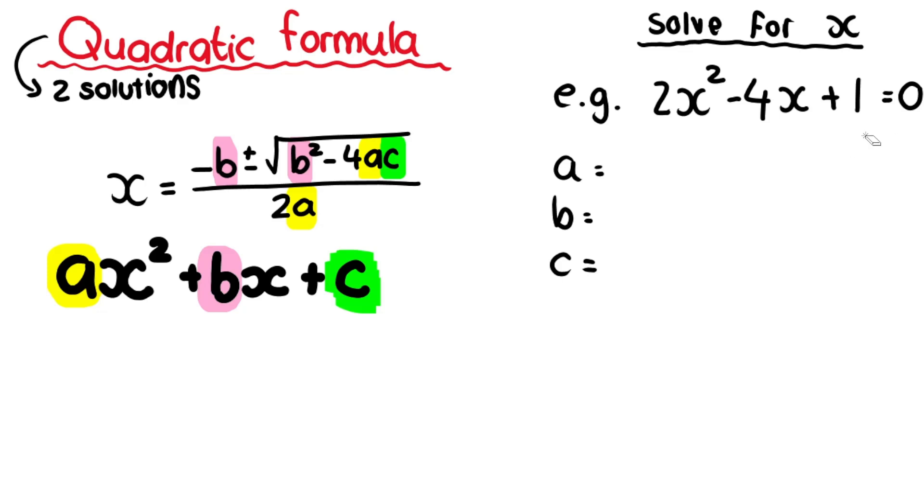Therefore, you will need to use the quadratic formula. In order to use it, you need to look for your A, B, and C values because you need to substitute those in. The A value is the coefficient, number and sign, in front of x squared, so that's positive 2. Your B value is the coefficient in front of x, so that's negative 4. Your C value is your constant value with no variable next to it, in this case positive 1. It helps to list this.